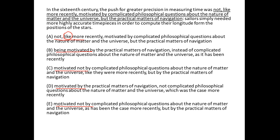Secondly, in option B we have 'being.' Being is highly avoidable in GMAT, so we can avoid this option. In C we have 'not,' so there could be a pair 'not X but Y.' So we can go one by one.